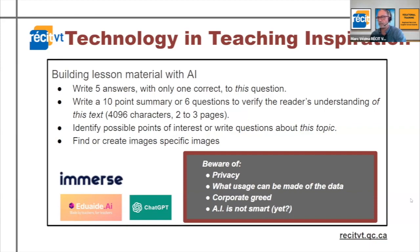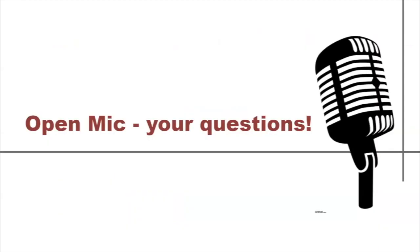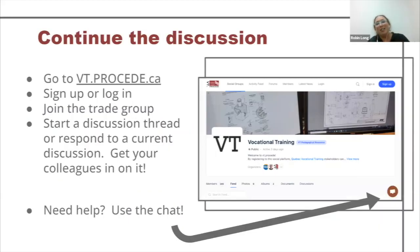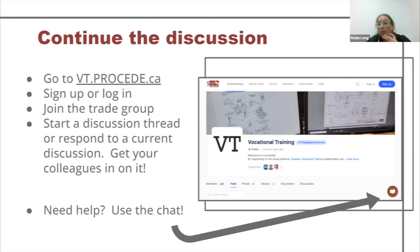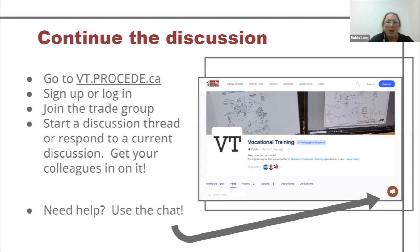Thank you everybody. If you would like to continue this discussion, please go to vt.proceed.ca, sign up or log in, and start a discussion thread. I always create a summary of this meeting and post it in your group discussion forum. There's also a chat feature — another AI — so if you need help with the website or anything, you can text me there. It goes to myself, my phone, or the tech support guy's phone for Proceed.